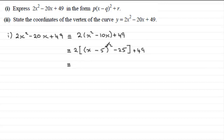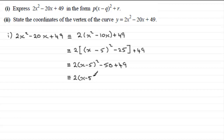Expanding the bracket, we get 2 times (x minus 5) squared, then 2 times minus 25 gives minus 50, plus 49. Tidying up, it's identical to 2(x minus 5) squared minus 1. If asked to state the values of p, q and r: p equals 2, q equals 5, and r equals negative 1.